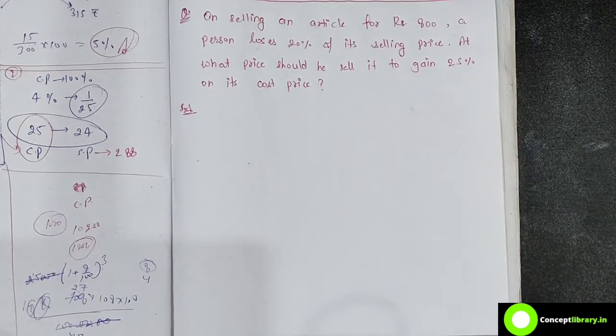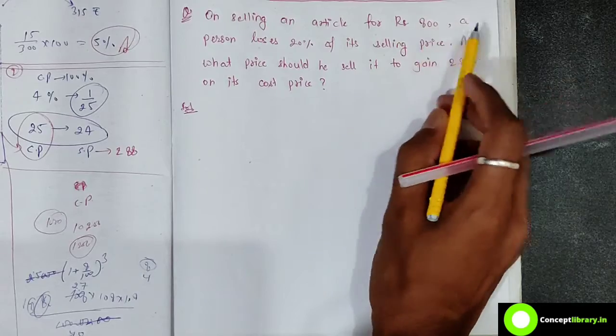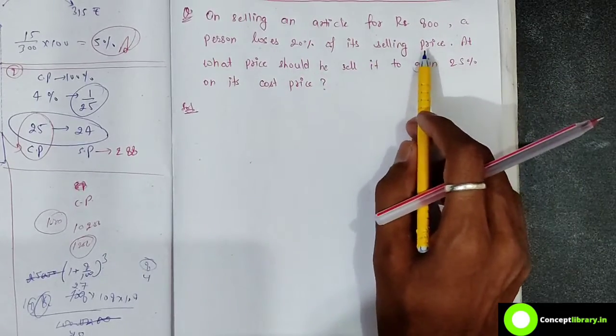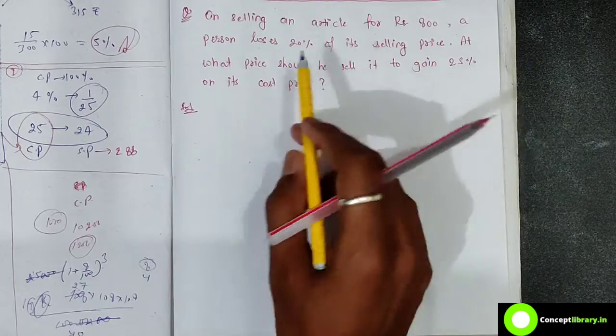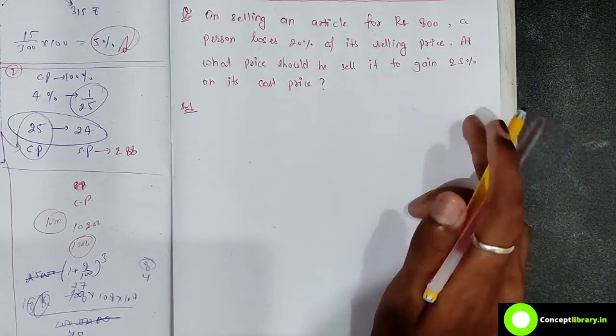What is the question? On selling an article for Rs. 800, a person loses 20% of the selling price. At what price should he sell it to gain 25% on its cost price?